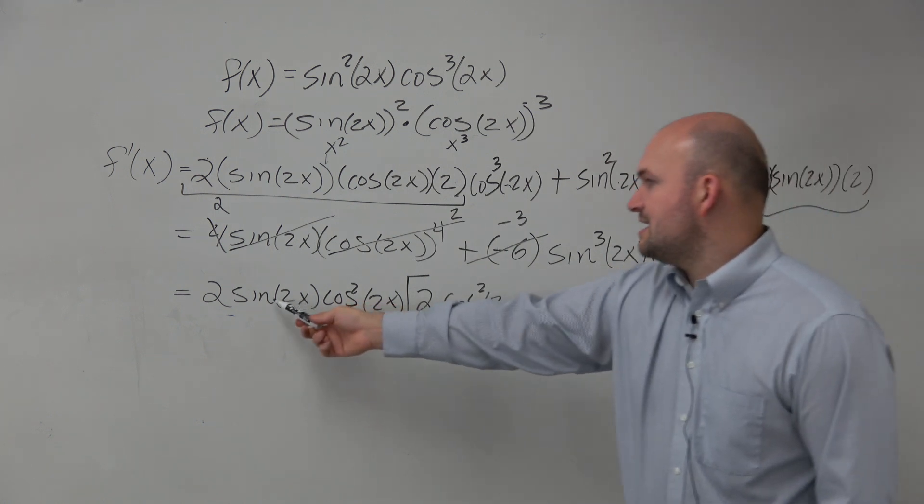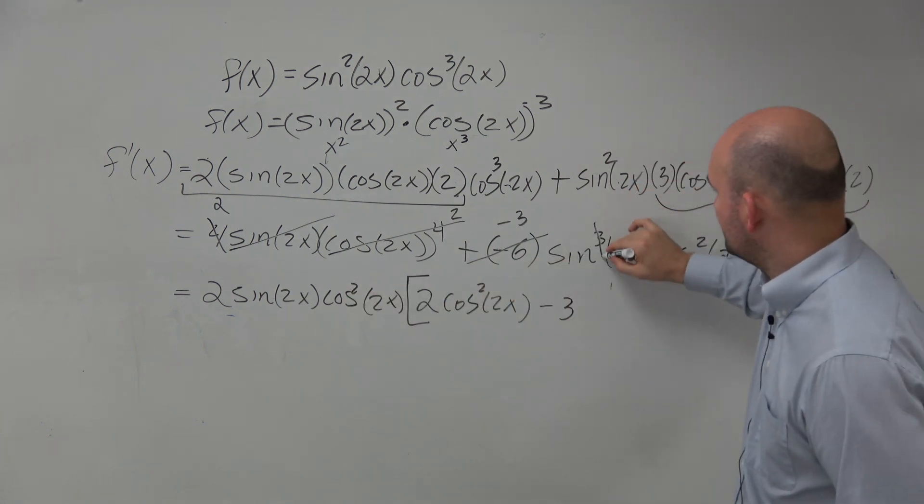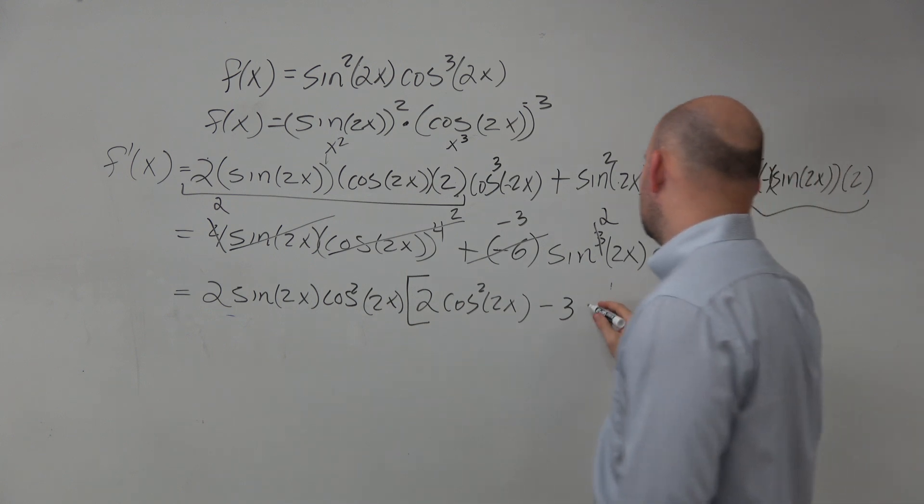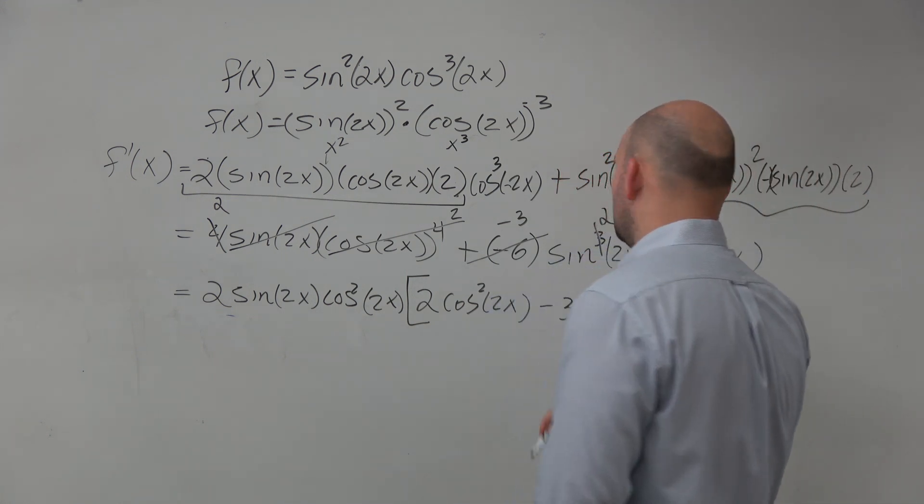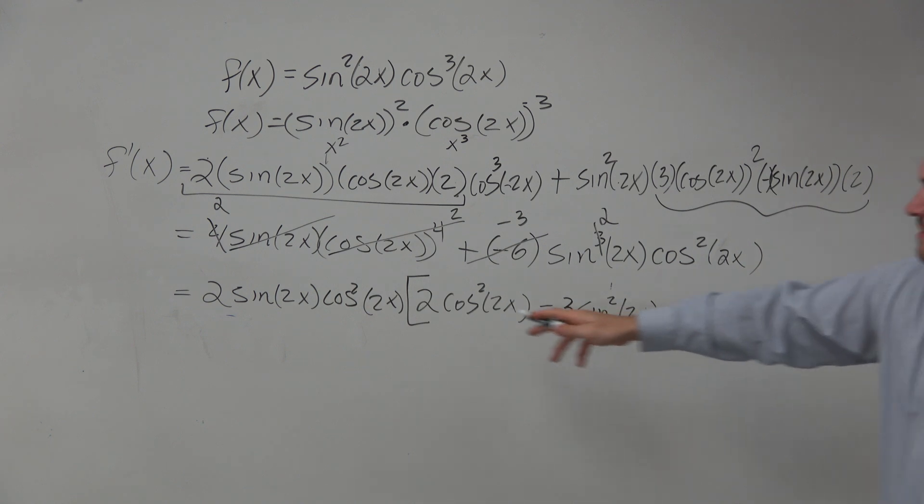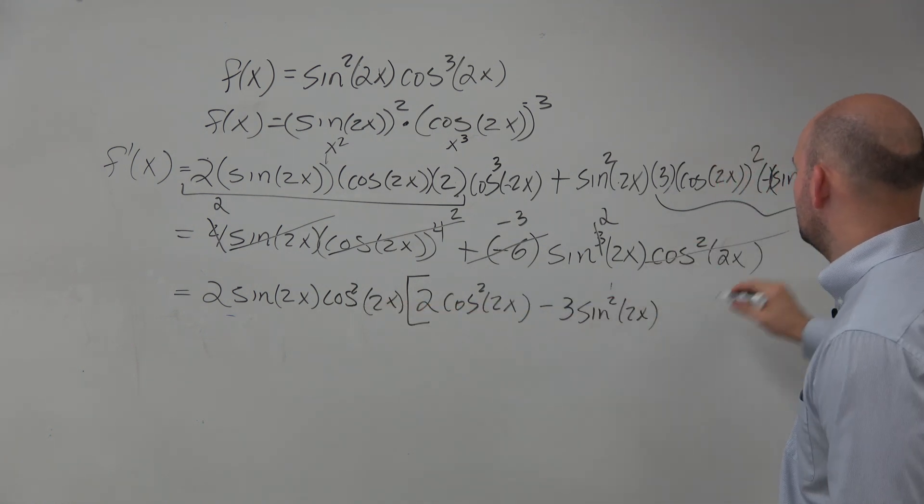When I factor out a sine of 2x from there, that's going to turn into a squared. So that would be a sine squared of 2x. And then I factor out a cosine of 2x. So therefore, that just gets a little bit.